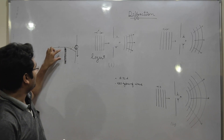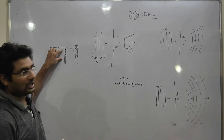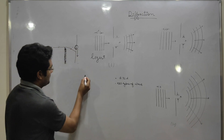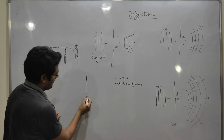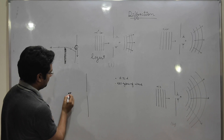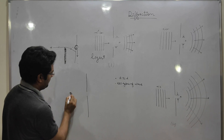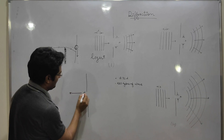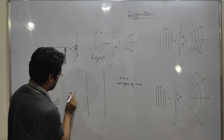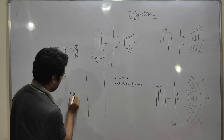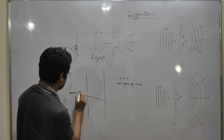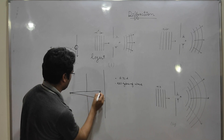Whether it is a sharp corner, or a pinhole, or a slit — when light bends around an opaque obstacle, we call it diffraction. When light goes past a corner, it undergoes diffraction.